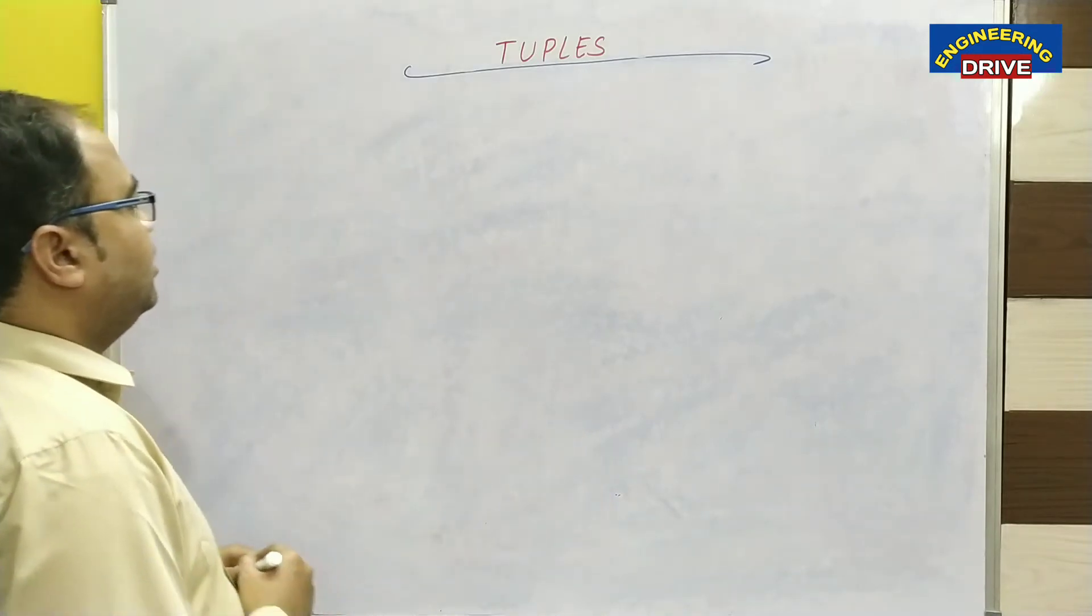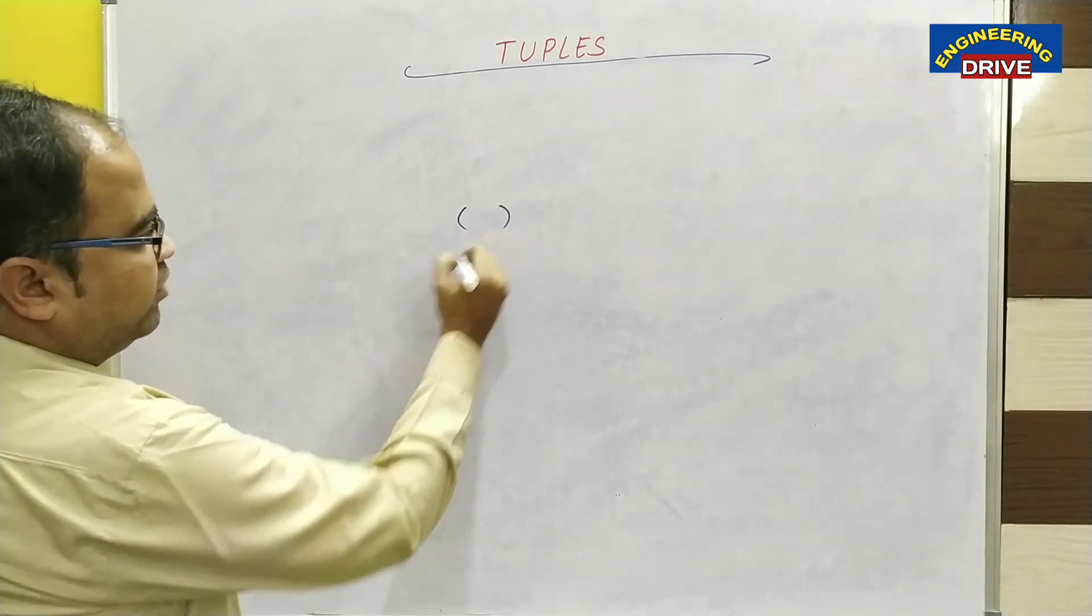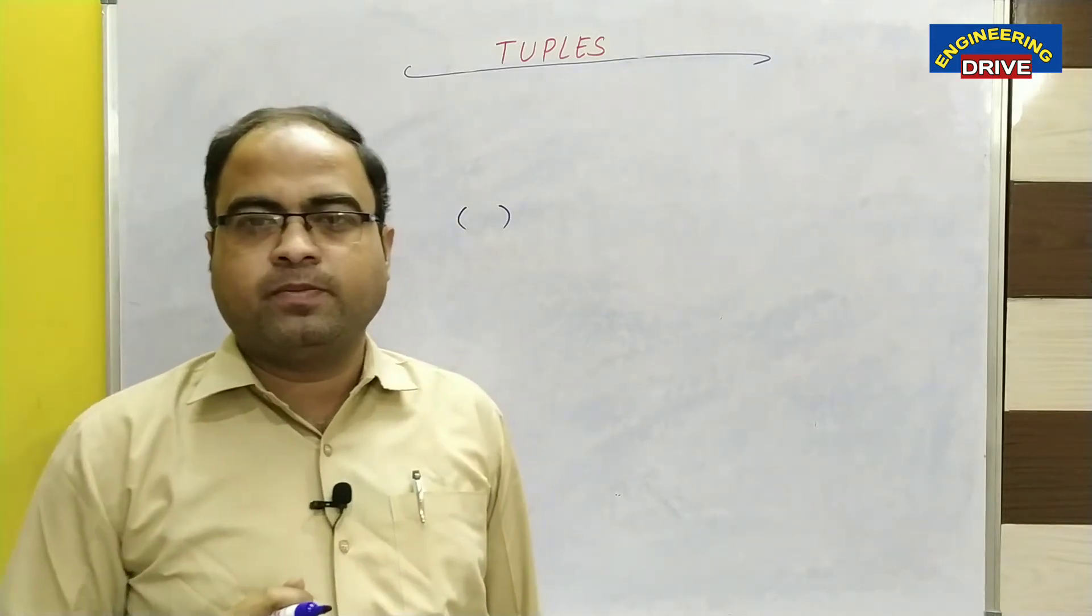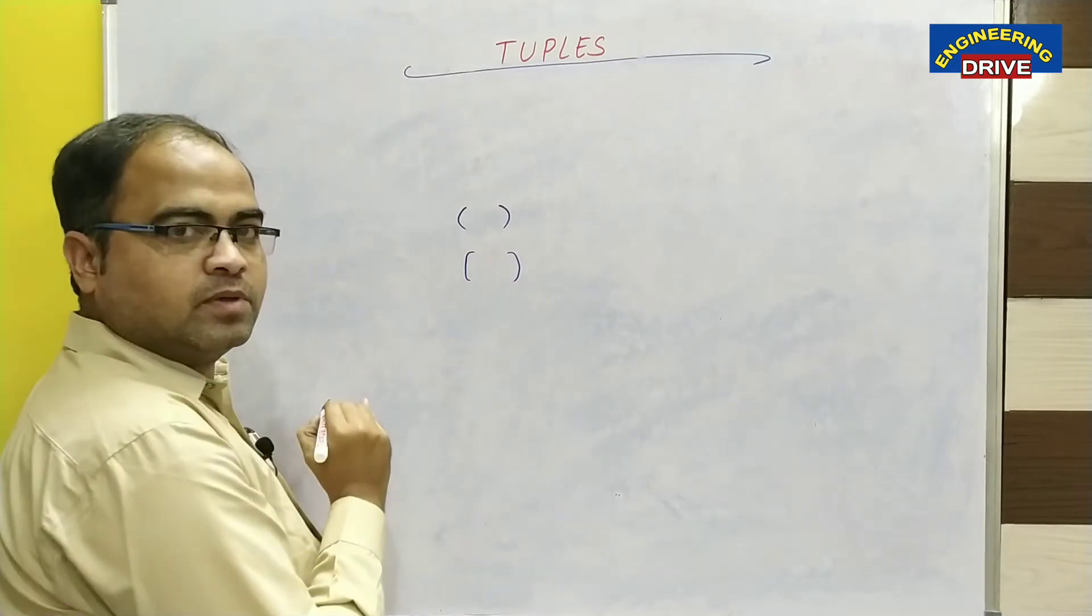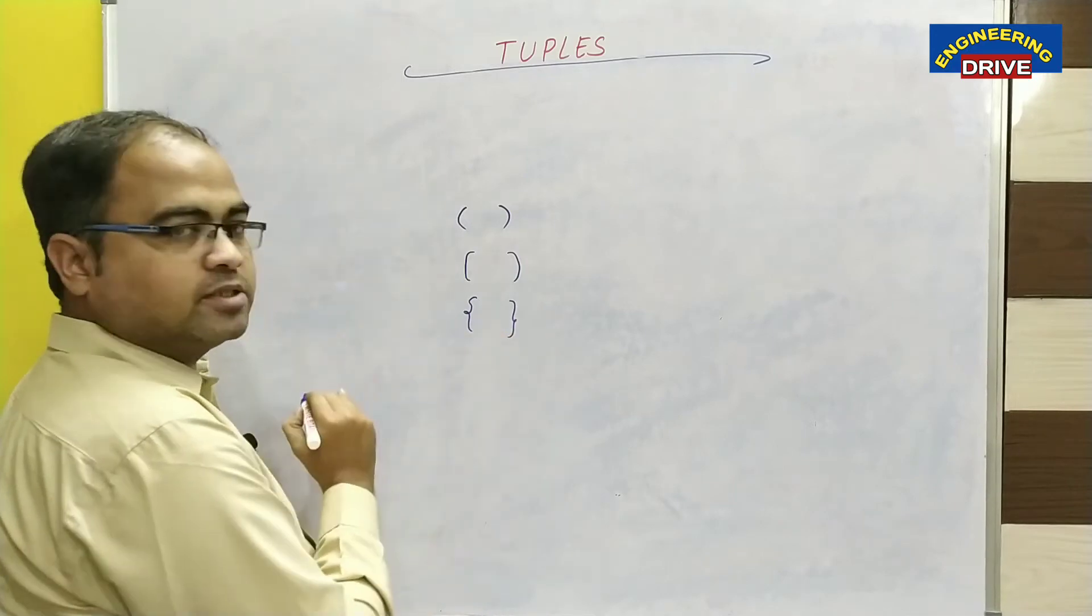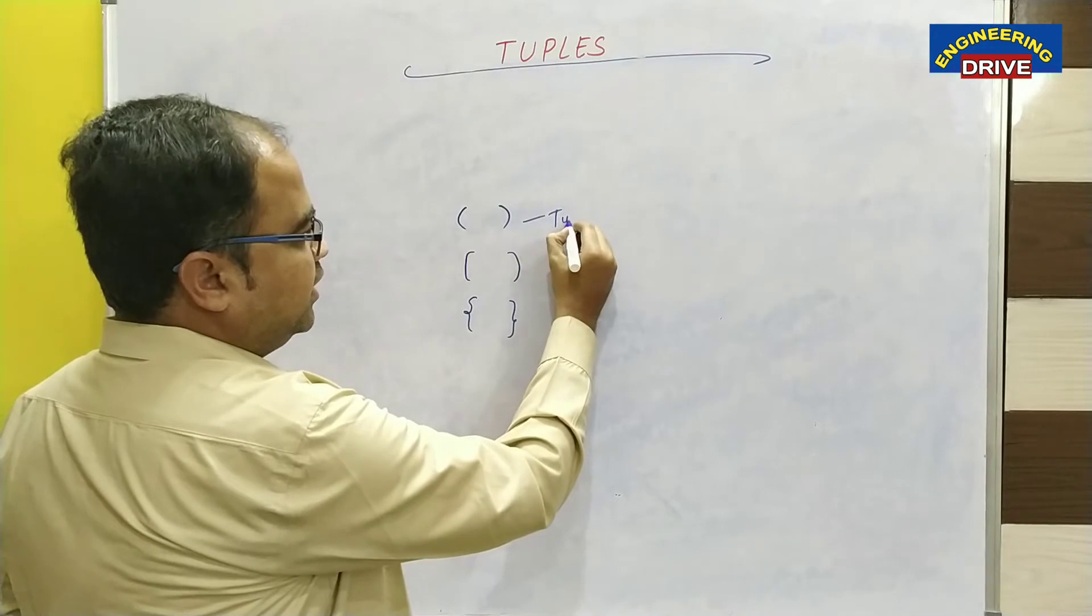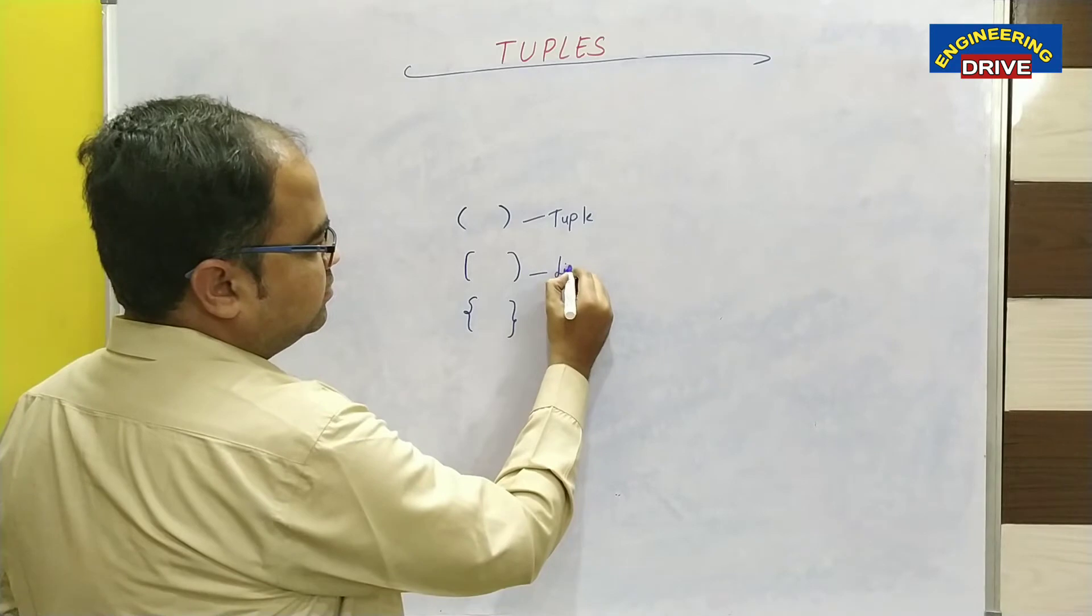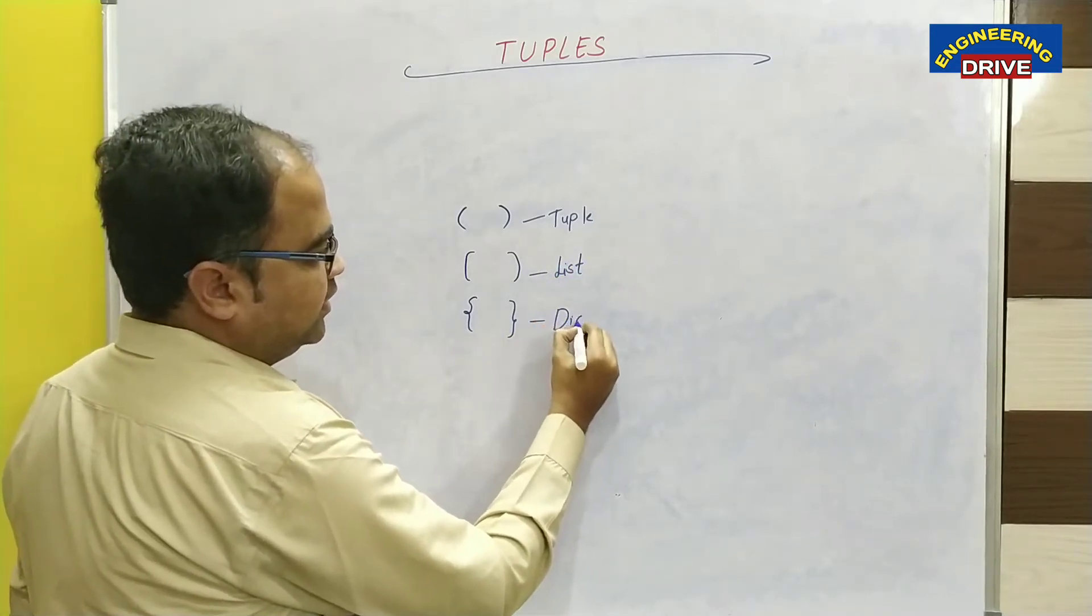Dear students, a tuple is represented with the help of parenthesis. So if a parenthesis is available, then you need to know that it is a tuple. We know that a list is represented with the help of brackets. Next, dictionary is represented with the help of opening and closing braces. So whenever we are using parenthesis, it is a tuple. Whenever you are using a bracket, then it is a list. And whenever we are using opening and closing braces, this is a dictionary.